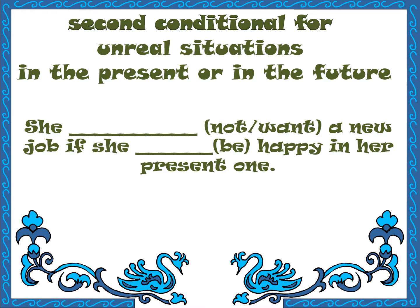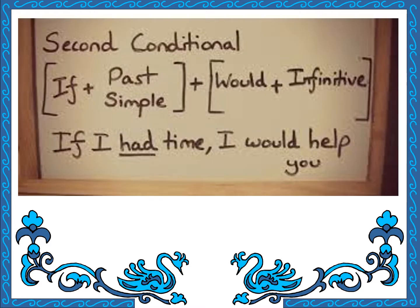She wouldn't want a new job if she was happy in her present one. The rule for the second conditional: if + past simple + would + infinitive. The infinitive is the base form of the verb — 'play', not 'plays', 'played', or 'playing.' Even in negatives: if I had time I wouldn't — the base form stays: 'help', not 'helps' or 'helping.'